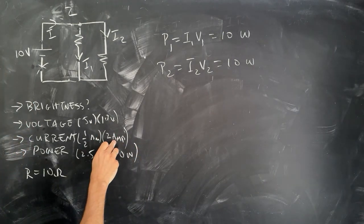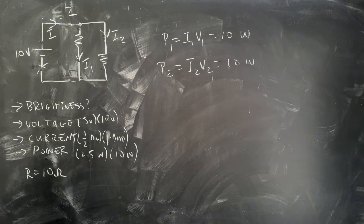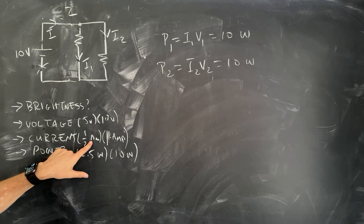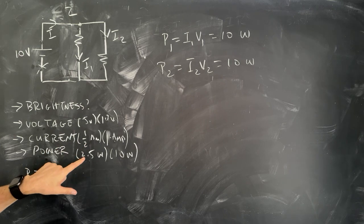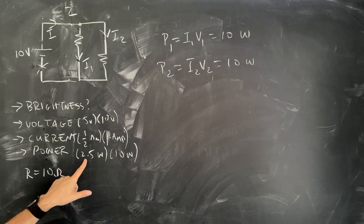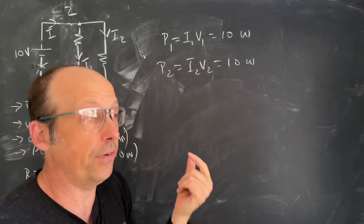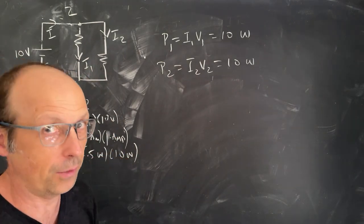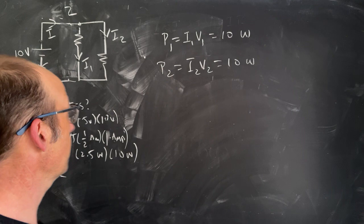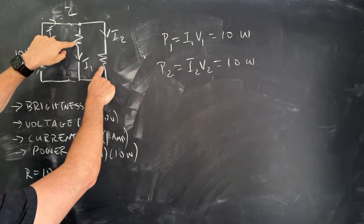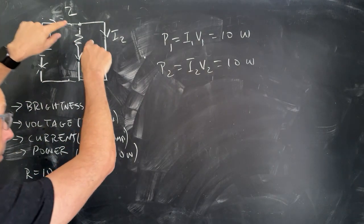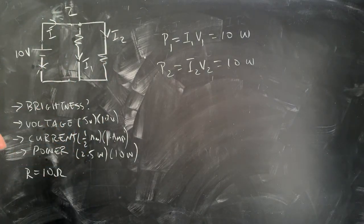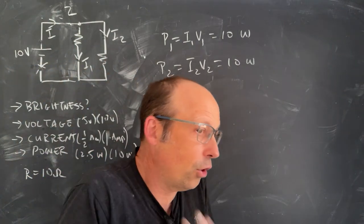P2 equals i2 times V2 equals 10 watts as well. Comparing the two circuits: in circuit one, each bulb had 2.5 watts, for a total of 5 watts. In circuit two, each bulb has 10 watts, for a total of 20 watts. The parallel bulbs have the same current as each other, so they're equally bright, but they're both brighter than the bulbs in system one.